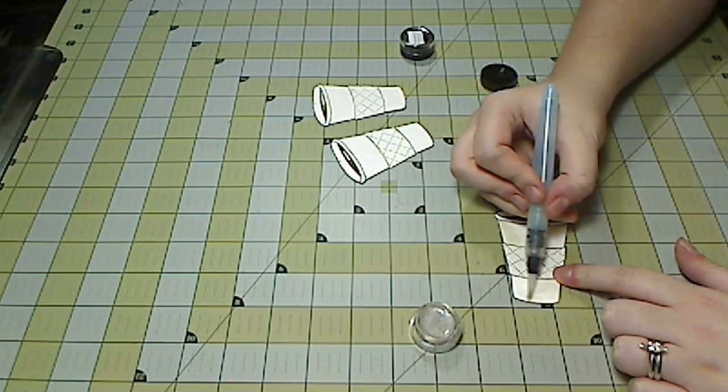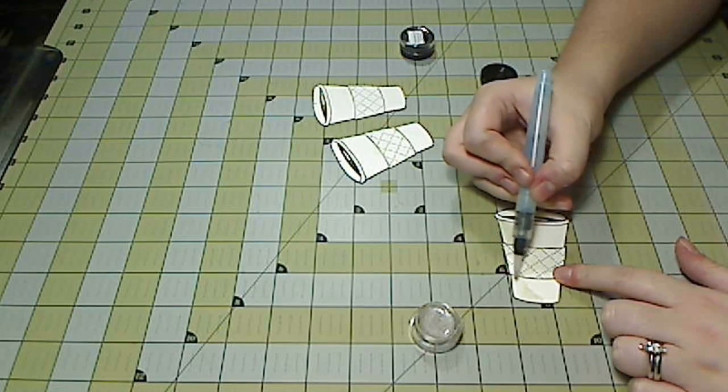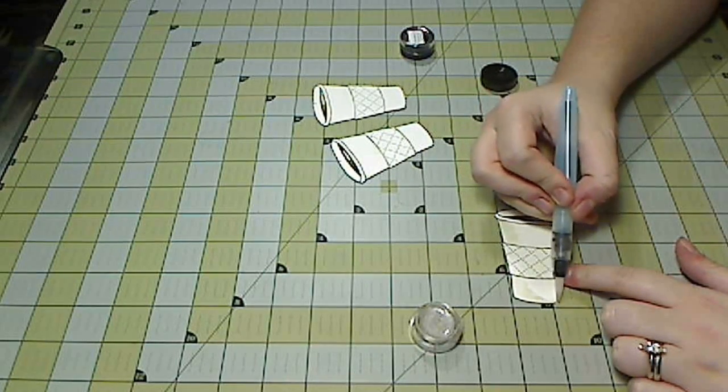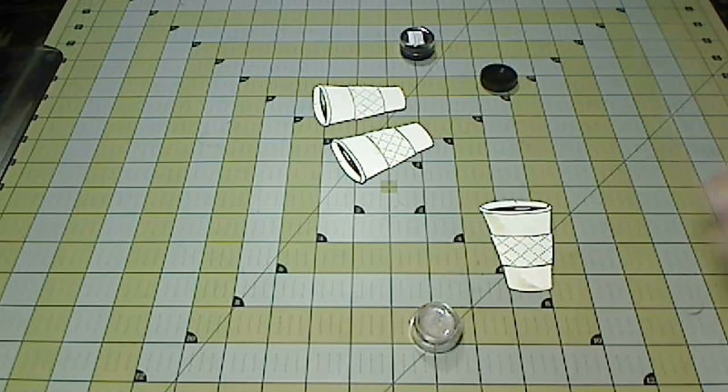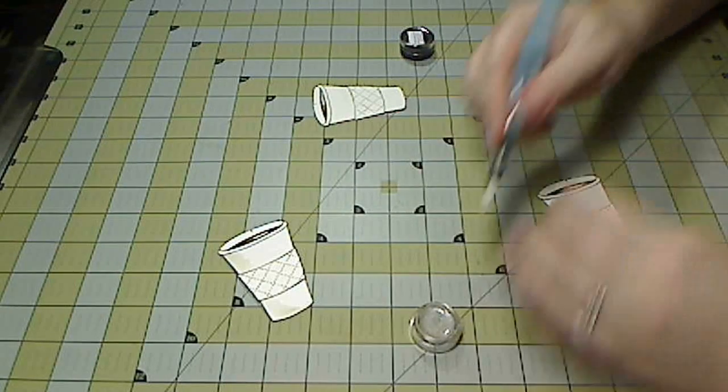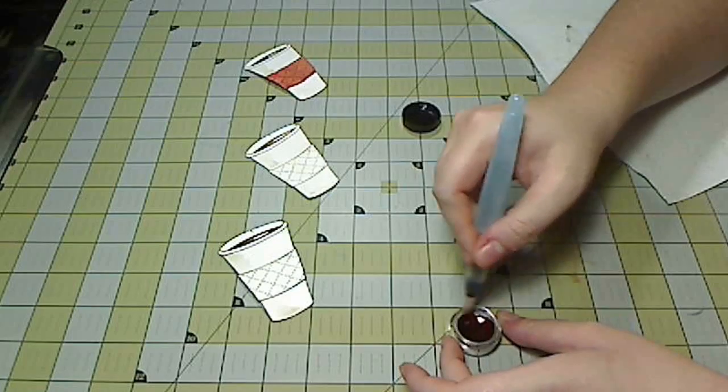So that's what these cards are for and I am using the Pale Porcelain which is a nice soft gray to color in the side of the cup to give it sort of added dimension and shading.